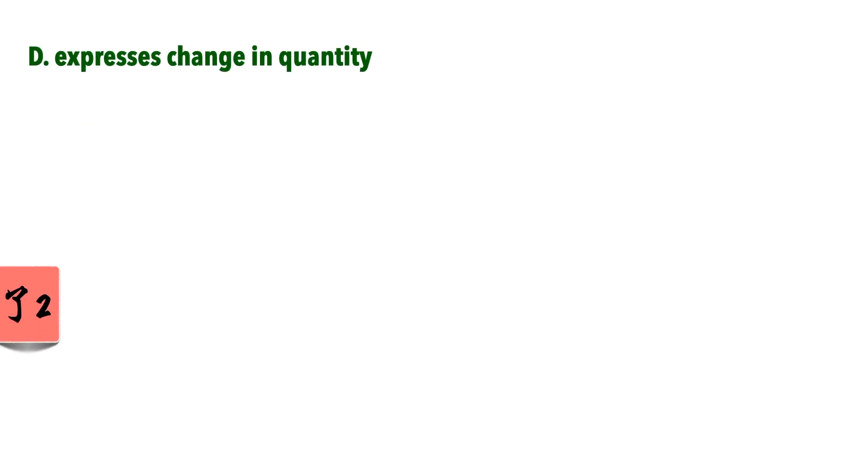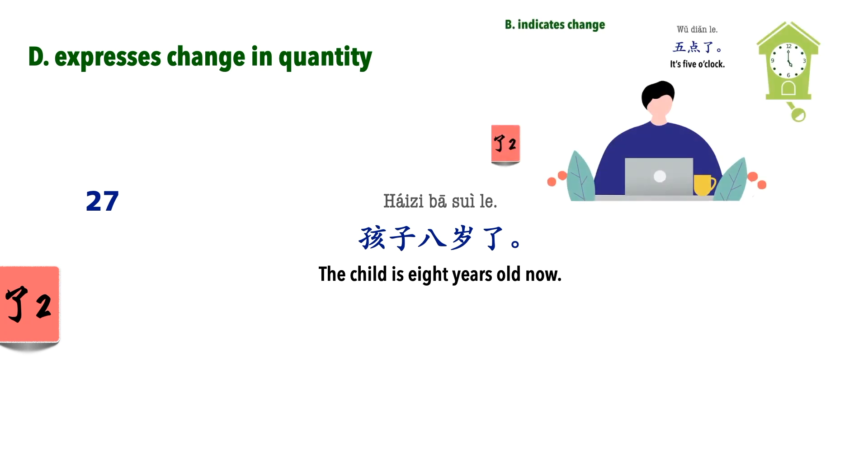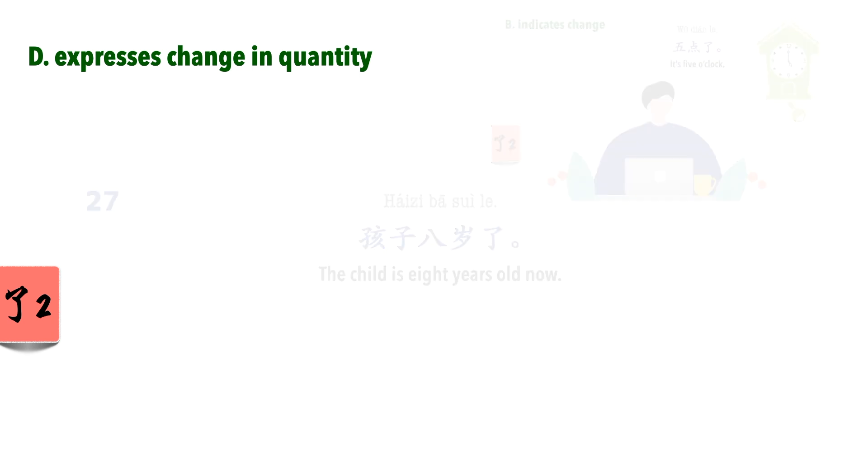Expresses change in quantity. Again, this is about change, so it should come under point B, but because it's a huge topic, I had to separate it. We'll start from something simple. 我八岁了. This indicates that there has been change in the age, and now it has reached 8 years old. This is in fact the same category as the example 1A that we looked at: 五点了. There's been ongoing change in the time, and now it has reached 5 o'clock. Let's now look at something more complex, using 了2 with the complements of quantity and duration.